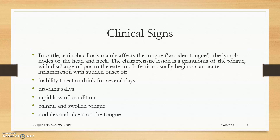Actinobacillus mainly affects the tongue and is known as wooden tongue. Why wooden tongue? Because the tongue gets high tensile strength — it becomes highly firm and strong due to fibrosis inside the tissue. This leads to granuloma of the tongue, which may break down.